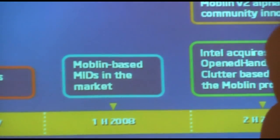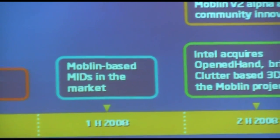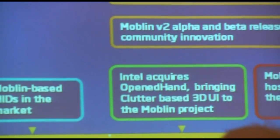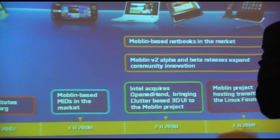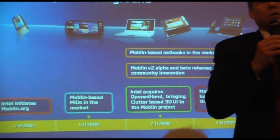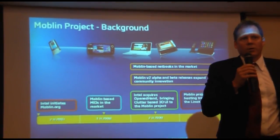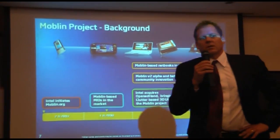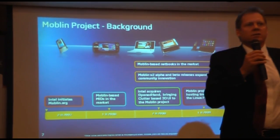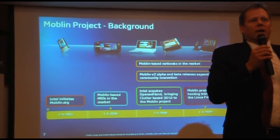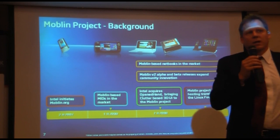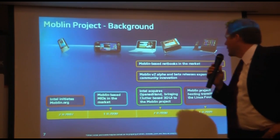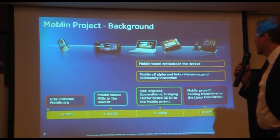In the first half of 2008, our first mobile internet devices hit the market with Moblin-based technology incorporated. We had a lot of help and support from our OSVs like Canonical and Agenix, and a lot of participation from our OEMs like Clarion, Compal, iGo, and others.